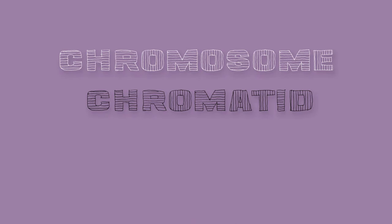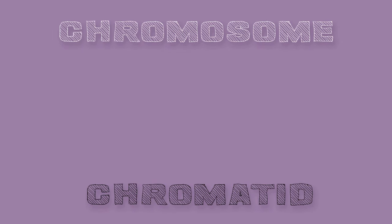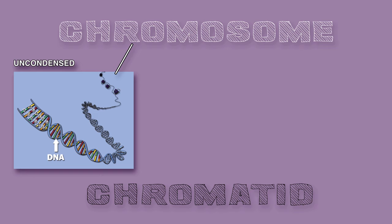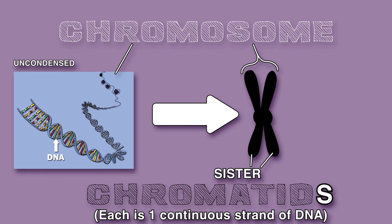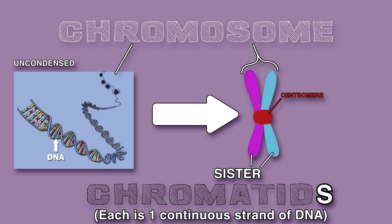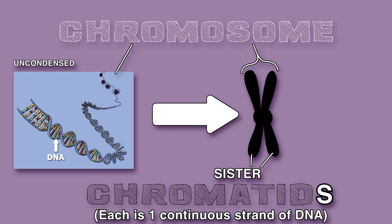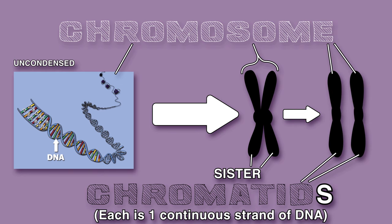It is important to discuss two closely related and commonly confused terms: chromosomes and chromatids. Before replication, the term chromosome refers to a continuous strand of DNA, but during replication, the term chromosome refers to the two sister chromatids linked together with a centromere. These sister chromatids include the original chromosome and its identical replica. After DNA replication you have a chromosome made up of sister chromatids. When cell division takes place, the sister chromatids are separated, resulting in two daughter chromosomes.